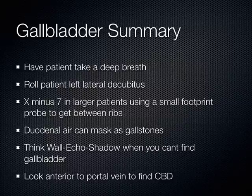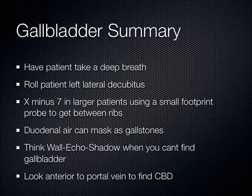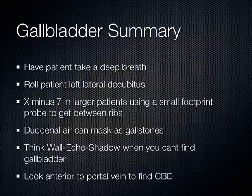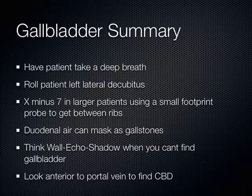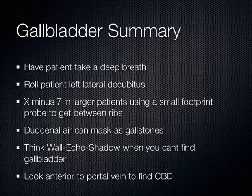In summary, the best way to think about the gallbladder: have the patient take a deep breath — respira profundo. Roll the patient left lateral decubitus to get the duodenum to fall out of the way. X-minus-7 in larger patients, and to get between the ribs, switch to a small footprint like a microconvex or the P21 probe. Duodenal air can sometimes look like gallstones. When you can't find the gallbladder, consider a contracted gallbladder around a stone — the WES sign. Whenever looking for the common bile duct, look anterior to the portal vein.